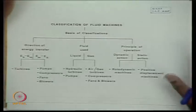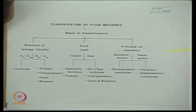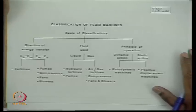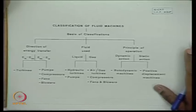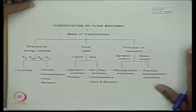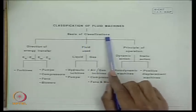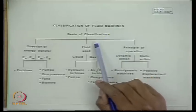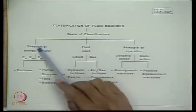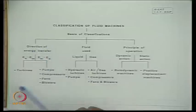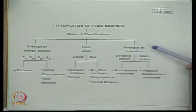Next we come to the classification of fluid machines, which is very important. Fluid machines are very broad in their classifications; they are put into different categories under certain bases. They are broadly divided into three bases: one is direction of energy transfer, another is the fluid used, and another is the principle of operation.